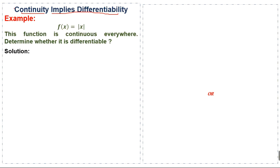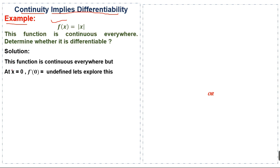Now we will see: if a function is continuous, is it also differentiable at that point? Consider the example f(x) = |x|. This function is continuous everywhere — for any value of x there is no discontinuity. However, at x = 0 the derivative of the function is undefined.